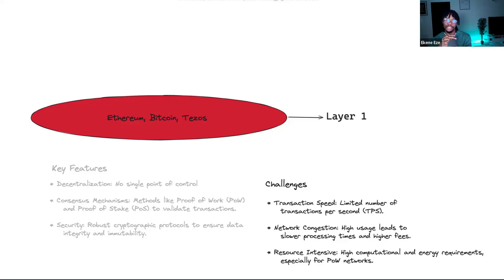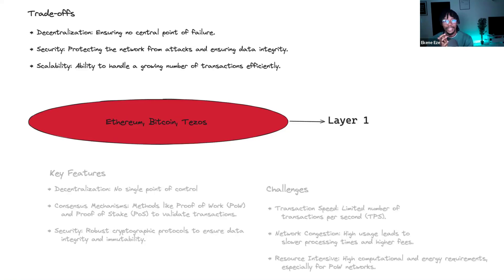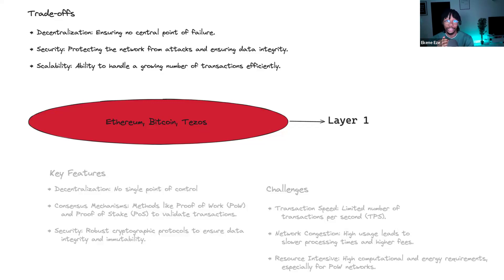It's also resource intensive — the machines running validators for these networks require very high CPU and GPU capacity. This issue brought us to what we call the blockchain trilemma: decentralization ensures no single source of failure, security protects the network from attacks, and scalability lets us handle as many transactions as possible. However, it becomes very difficult to achieve all three simultaneously.